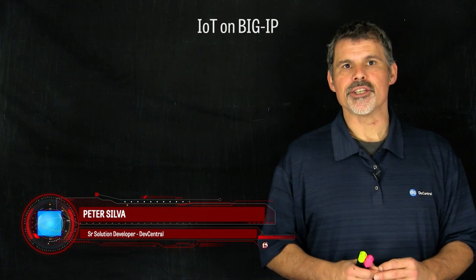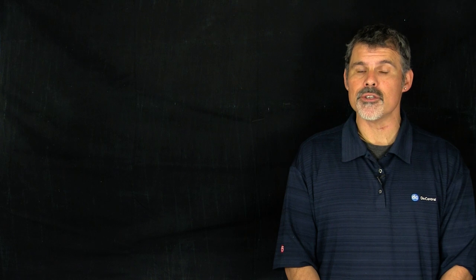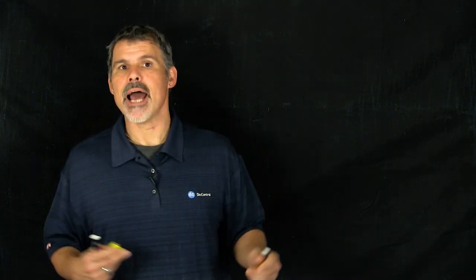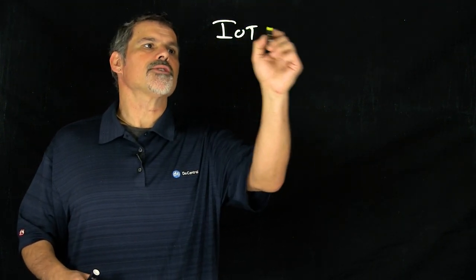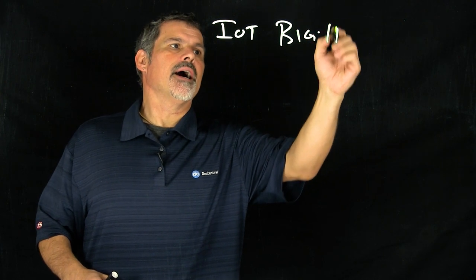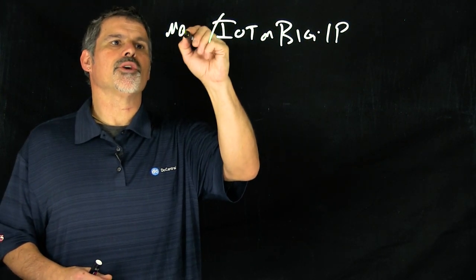I'm Peter and welcome to another edition of F5 DevCentral's Lightboard Lessons. As more organizations deploy IoT applications in their data centers and clouds, they're going to need their application delivery controller to understand the unique protocols that IoT devices use to communicate. A couple weeks ago, we drew out how MQTT — Message Queue Telemetry Transport — works in general. I'll put a link if you missed that video. This time we're going to look at how the IoT protocol MQTT works on the Big IP.